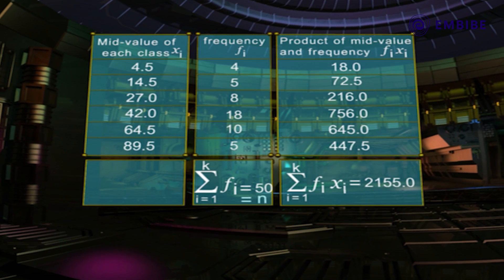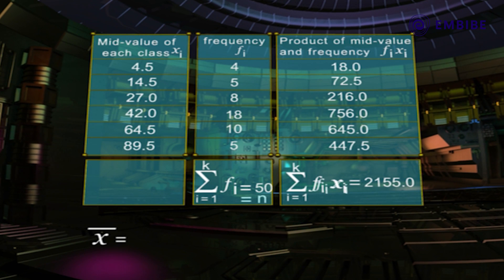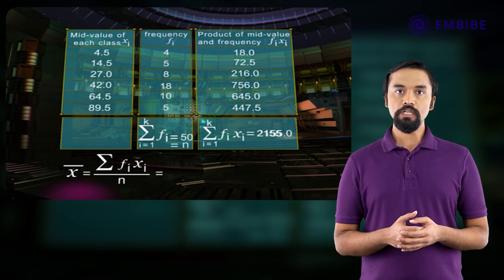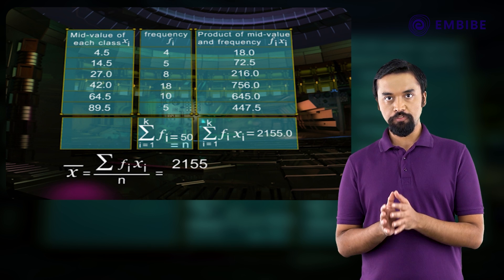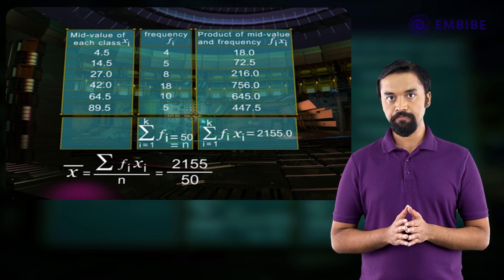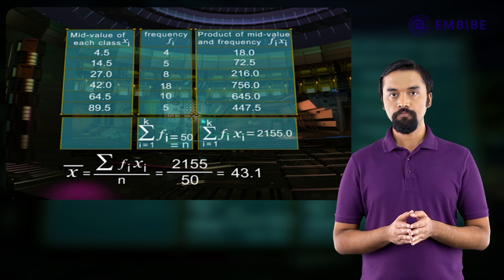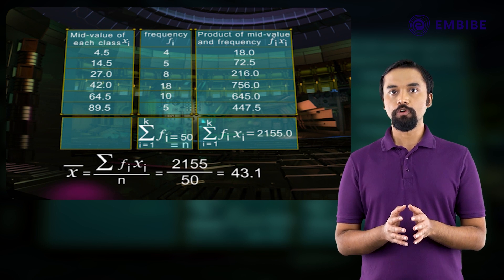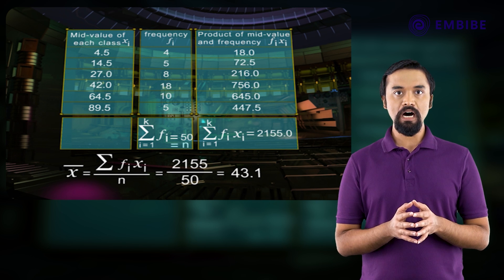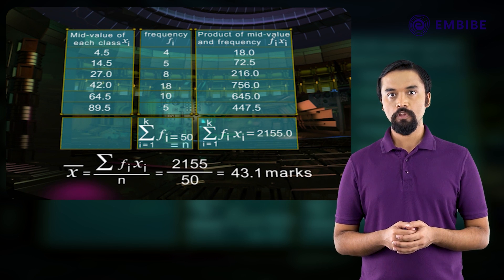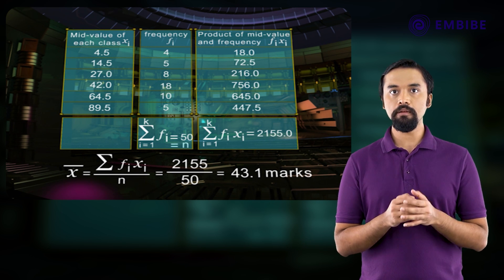Using the formula for the mean of group data, we get X bar is equal to sigma fᵢxᵢ upon n, is equal to 2155 upon 50, is equal to 43.1. Therefore, the mean of group data, X bar, is equal to 43.1 marks.